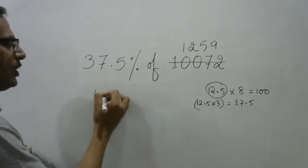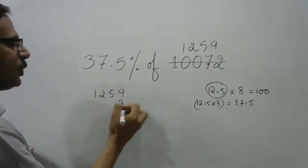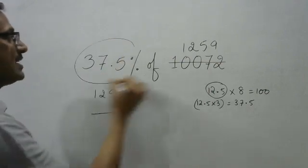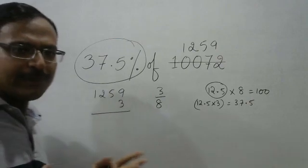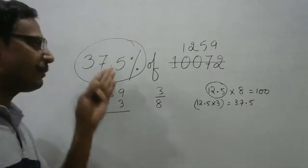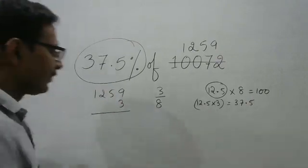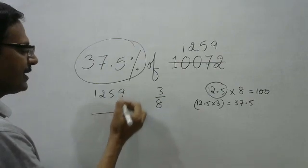Because actually this percentage is 3 upon 8. 12.5 is 1 upon 8, so 37.5 is 3 upon 8. Now just multiply this and you get to the answer.